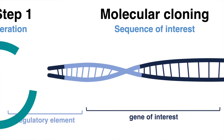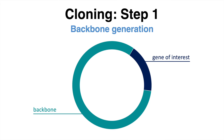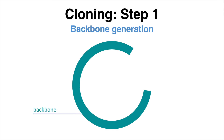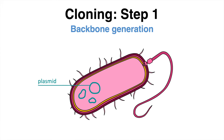The first step is about generating the vector, also called backbone — the piece of DNA in which the sequence of interest should be inserted in a later step. A commonly used type of vector are small circular pieces of DNA naturally found in bacteria, known as plasmids.